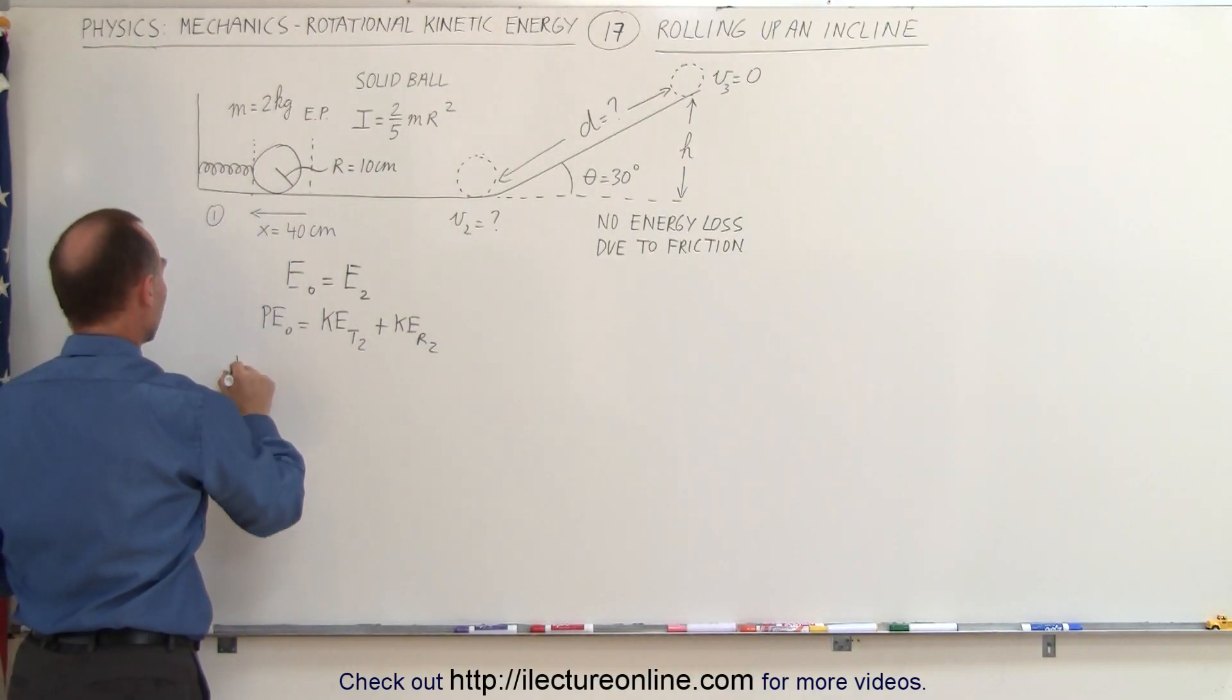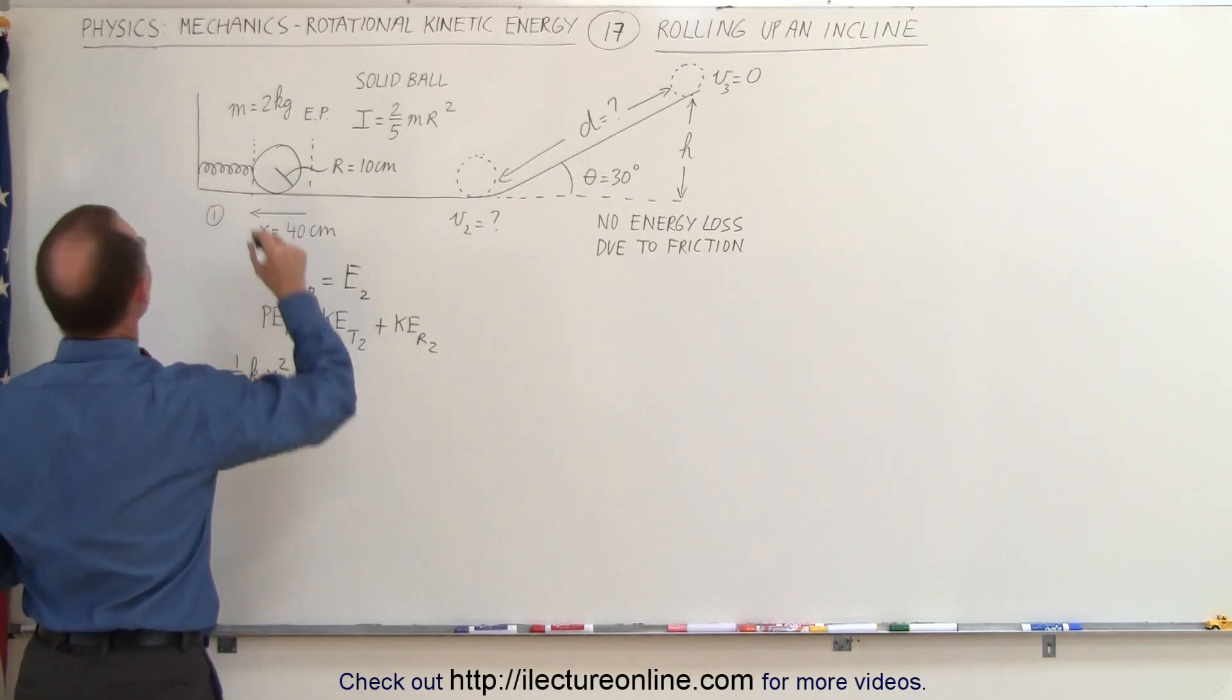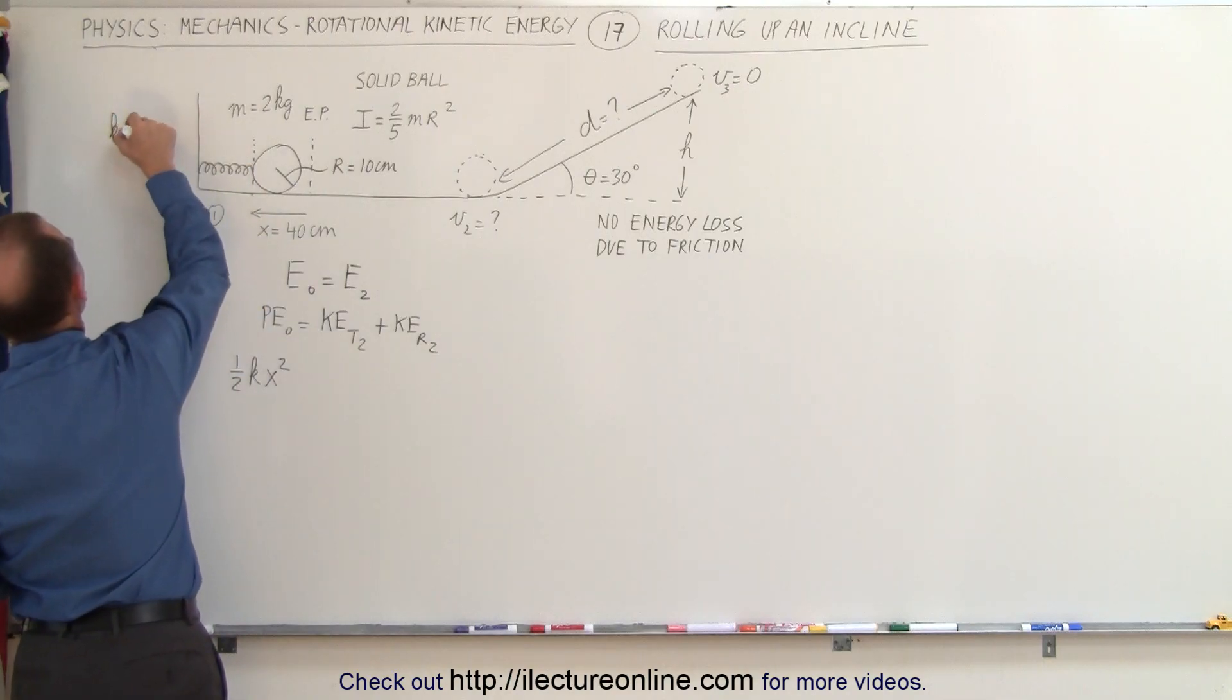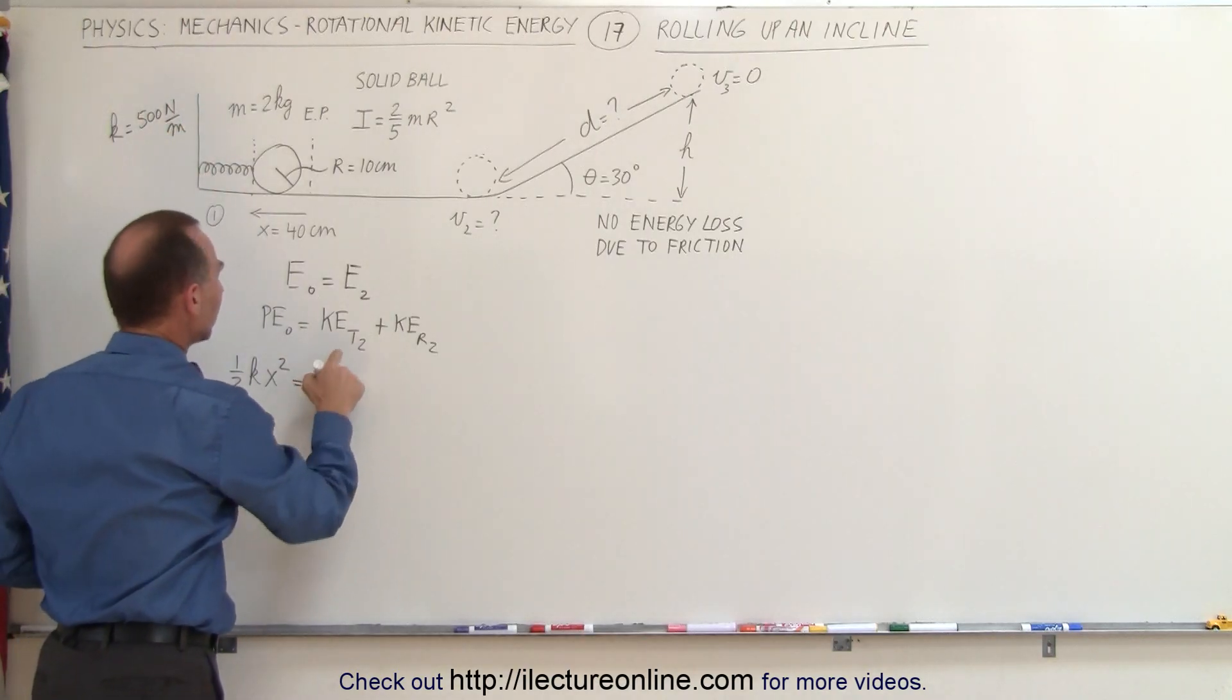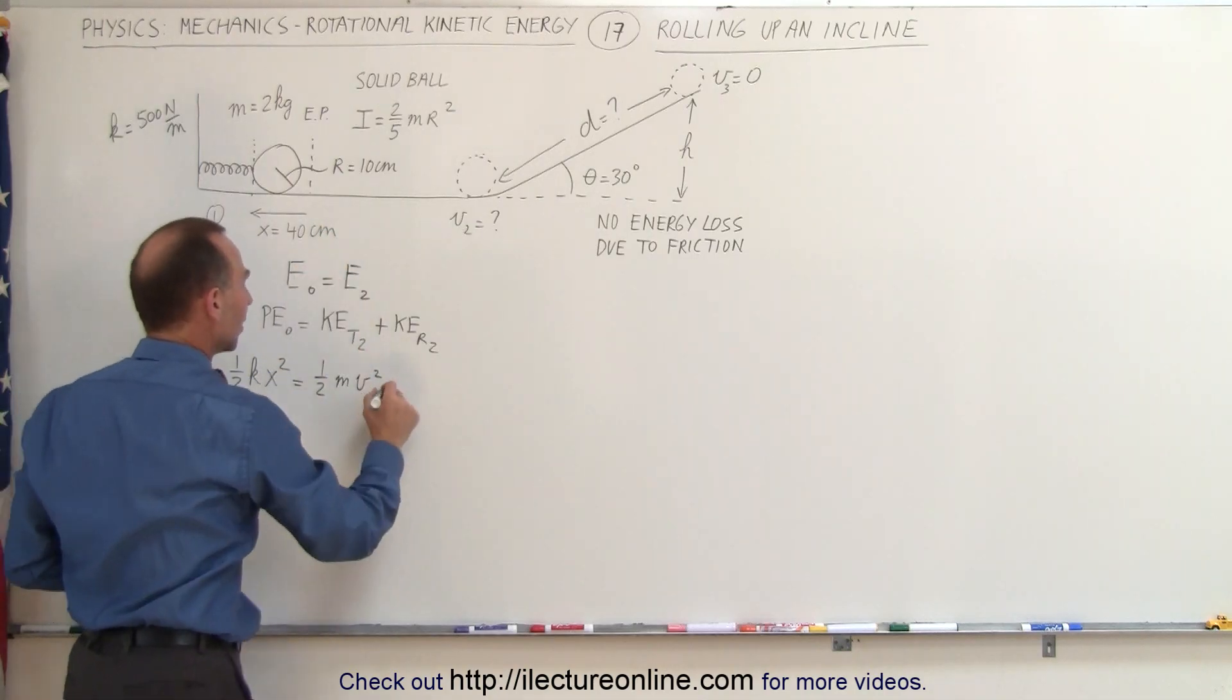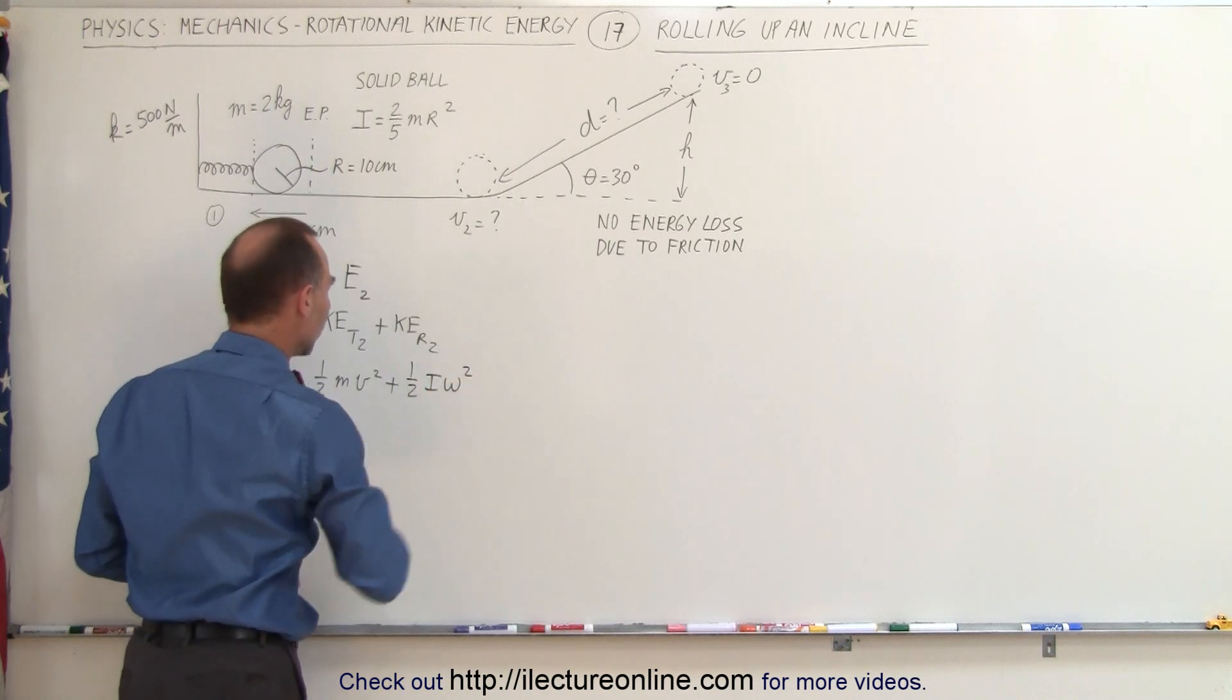Potential energy stored in the spring is 1/2 kx². We have the x right here, and the k is equal to 500 newtons per meter. That should equal the translational kinetic energy, which is 1/2 mv² of the rolling object, plus the 1/2 Iω² of the rolling object.